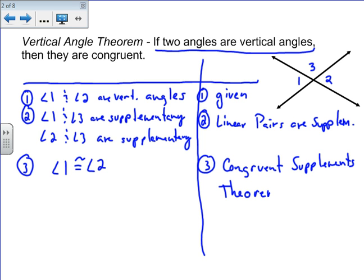And again, the Congruent Supplements Theorem is so important because it allows us to take two supplementary statements and combine them together to get congruent statements. That is: if two angles are supplementary to the same angle, then they are congruent. It can also be used if two angles are supplementary to congruent angles—then they are congruent. But that is sufficient; we've now shown angle one is congruent to angle two, which is what our goal was.